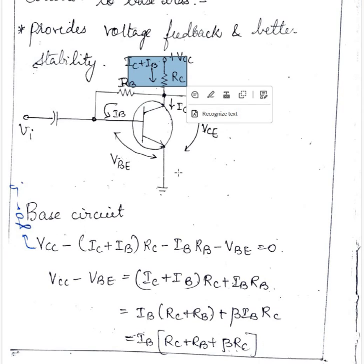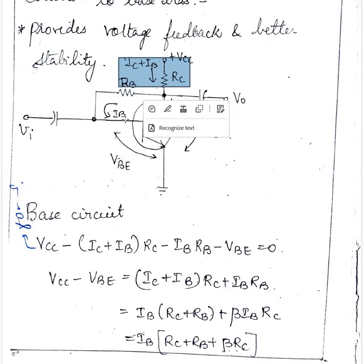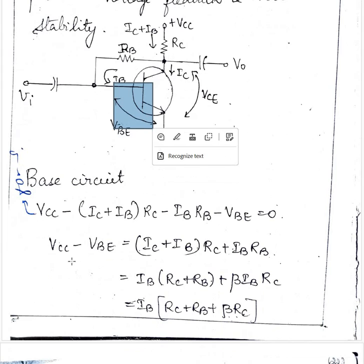So when we write the KVL here we don't have an emitter resistor. So the base writing the KVL for the input side it is VCC minus IC plus IB into RC minus IBRB minus VBE equal to 0.